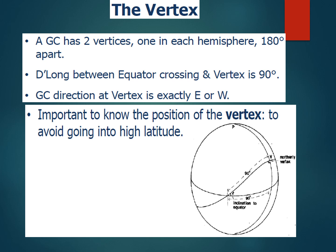The vertex is the highest point of the arc of a great circle. When you reach the vertex, for a very small distance the curve becomes like a parallel straight line, and that's why the direction there is exactly east or west. It's important to know the position of the vertex so that you can avoid going into high latitudes, because for any great circle course the vertex will be the highest point.